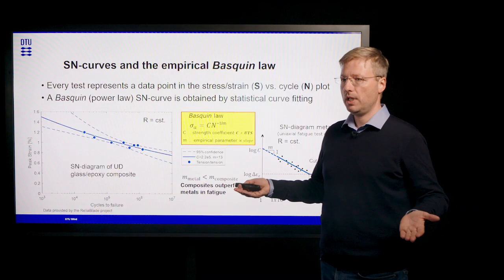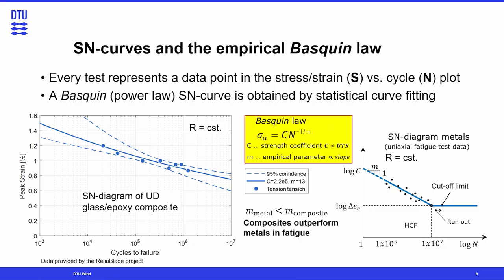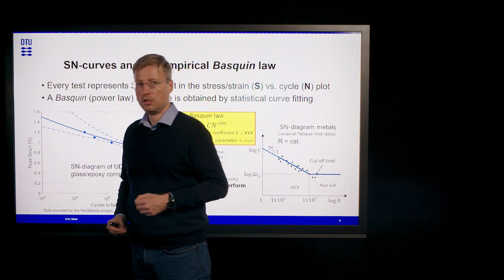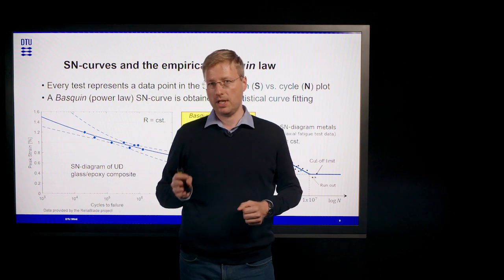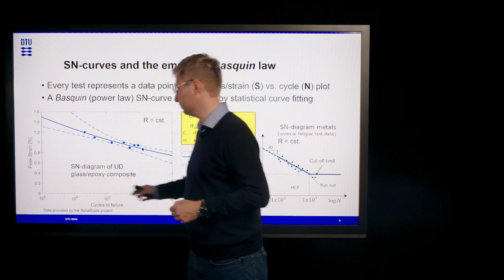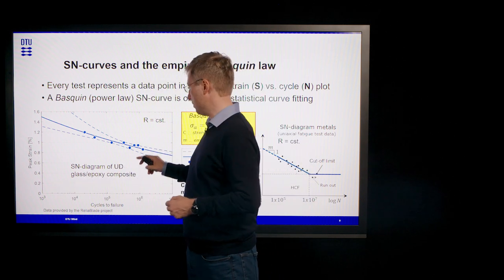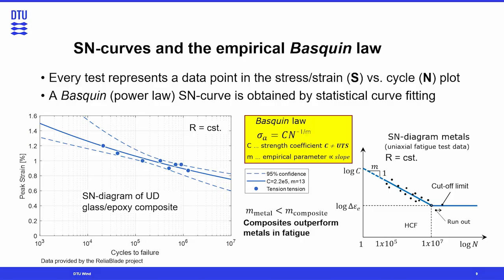After we have done many of those tests, we can start to produce an SN curve. SN stands for: S meaning stress or strain, which we traditionally plot on the vertical axis (the ordinate), whereas the number of cycles N we plot on the abscissa. Each test represents a dot in the SN plot, and in order to obtain an SN curve we need to fit a curve to this point cloud.